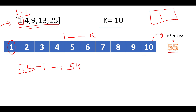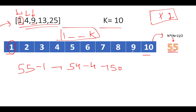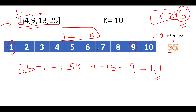Next, 9 is within range [1,10], so subtract 9; sum becomes 41 and vacancy count becomes 3. Next, 13 is not within range 1 to 10, so it does not contribute to the reduction. Similarly, 25 is not in range, so it also doesn't affect the sum. At this point, elements 2, 3, 5, 6, 7, 8, and 10 have been added, and we still need 3 more elements.